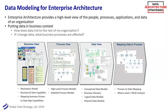Enterprise architecture is really that holistic view of the people, the processes, the applications, and of course the data. One view to consider: what's the business view? What are our motivations, what are the capabilities, what are the business drivers? Then what are the business processes that support that — either at the high-level macro view or down to the operational level of step one, step two — and what data is touched by each process.